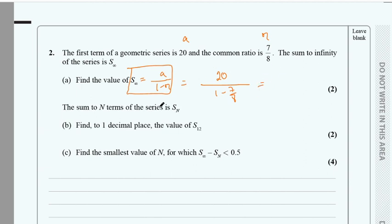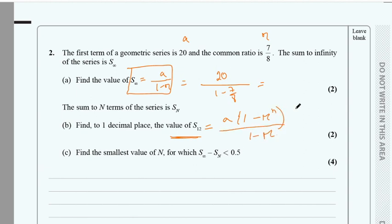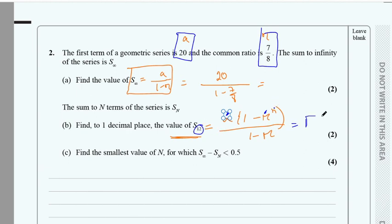We need to find the sum of 12 terms. The formula for sum of n terms is used, and since r is less than 1, you replace a with 20, r with 7/8, and n with 12 to find the value for part b.